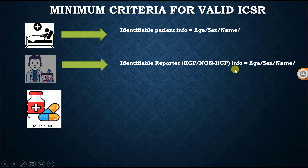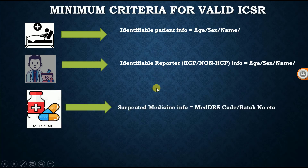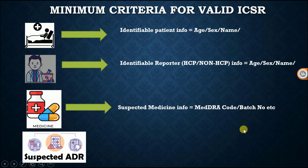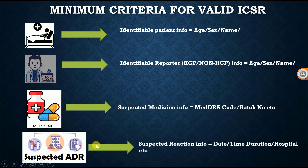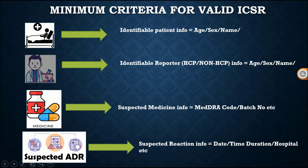Third, for the medicine, we require suspected medicine information such as the MedDRA code of that drug and the batch number. Fourth, we require the identifiable suspected ADR — the date and time it occurred, the time duration, and the hospital where it occurred. These four criteria are the minimum required for each ICSR report. If any one is missing, it will not be considered a valid ICSR. Guidelines for filling the form are given in ICH ICSR E2B R2 and updated by E2B R3.